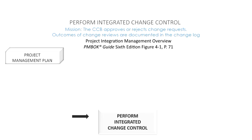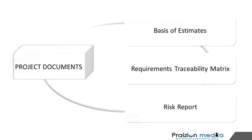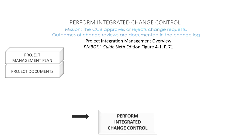Let's take a look at the inputs. First, you've got the project management plan as an input, because this tells you how to carry out the process of performing integrated change control. The next input is project documents — all manner of project documents could be looked at, such as a basis of estimates or an RTM, a requirements traceability matrix. When carrying out a review on a change control board, you'd want to know the health of the project and the areas that could be impacted.